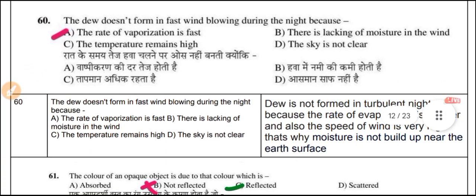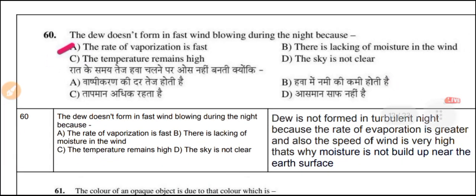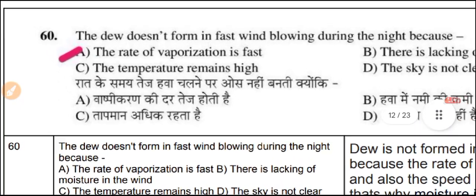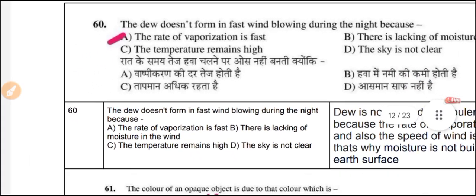Question 60: Dew does not form in fast wind blowing during the night because the rate of evaporation is fast. When the rate of vaporization is low, dew will form — typically seen in the morning time.